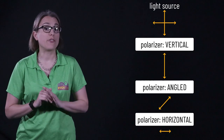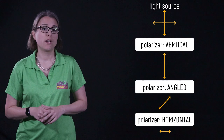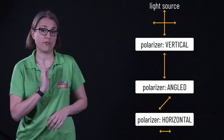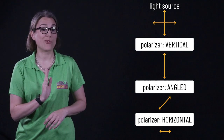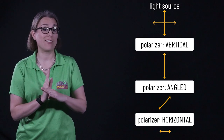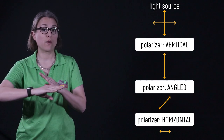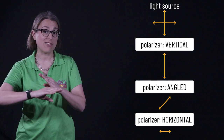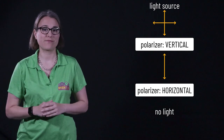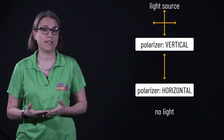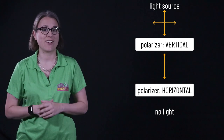We can think of the vector orientation of the light as it passes through each filter. The first causes the light to be oriented vertically. The second filter takes only the components of that vertical light that is oriented at its particular angle and allows it through. Finally, the horizontal polarizer takes the component of that angled light that's horizontal and allows it through. To completely block light, two adjacent polarizing filters must be at 90 degree angles to each other.